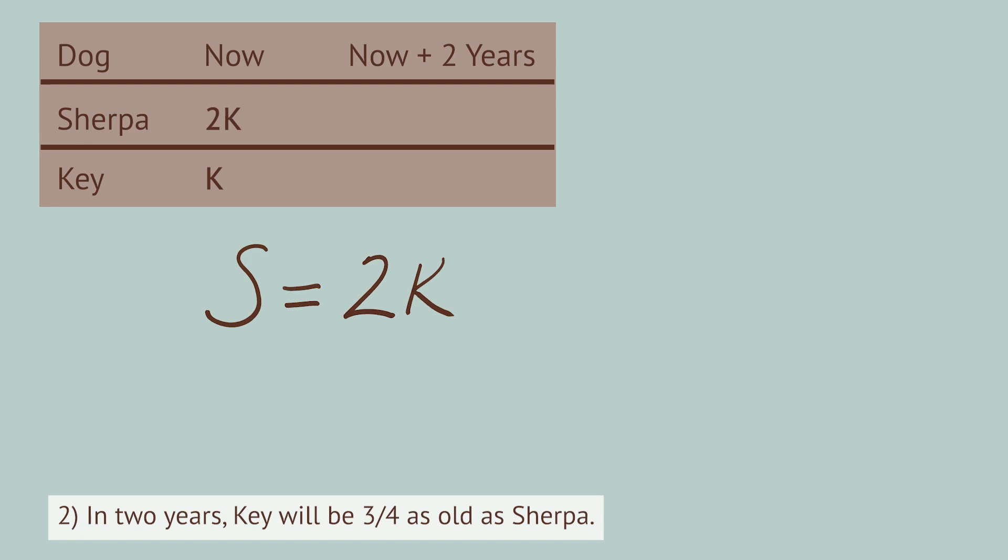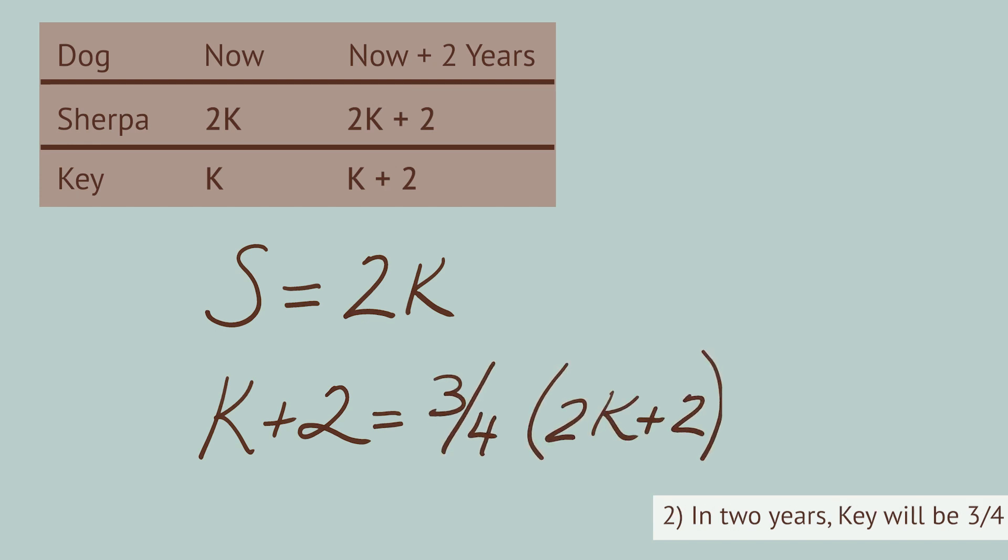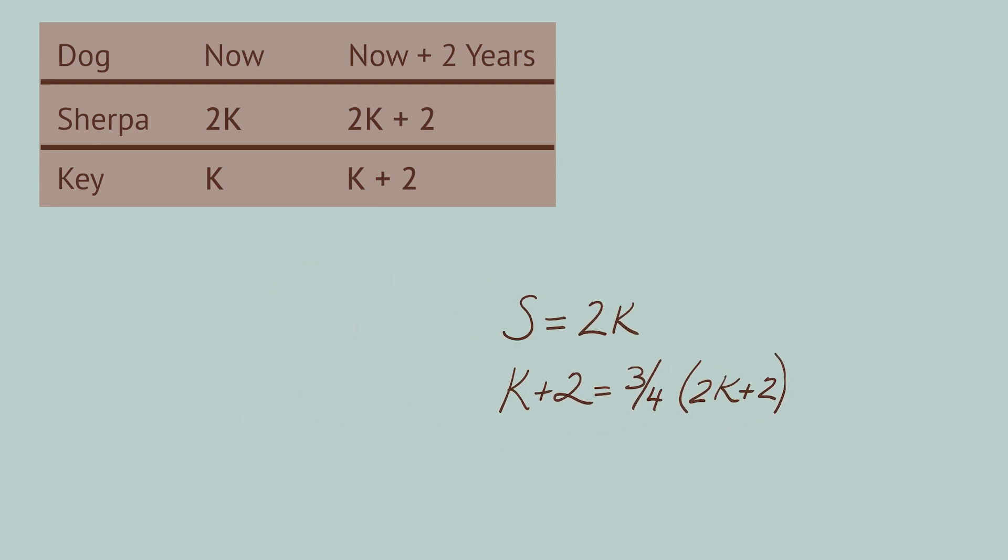Let's translate that sentence from words into an equation. In two years, Key's age will be K plus 2. And K plus 2 equals three-quarters as old as Sherpa, who will be 2K plus 2. So K plus 2 equals three-quarters times the quantity of 2K plus 2.